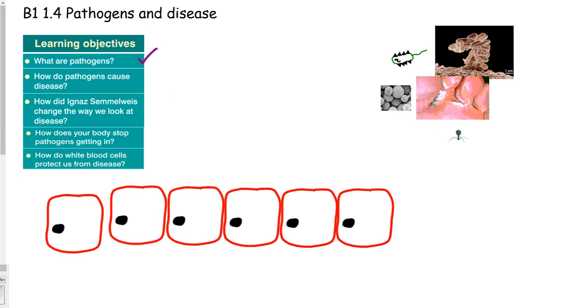In our last video we covered water pathogens and we know that the three types are bacteria, fungi and viruses. In this video we are going to look at how the pathogens cause disease and to start we will take a look at bacteria.